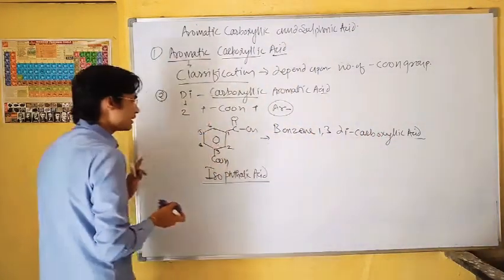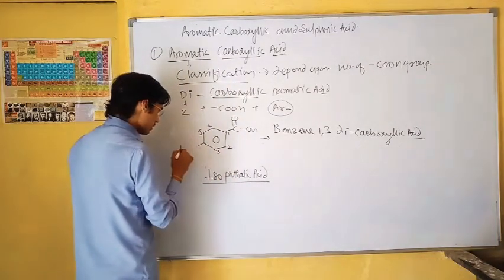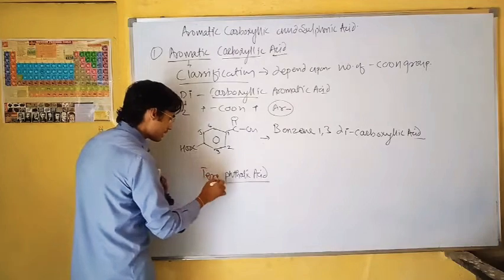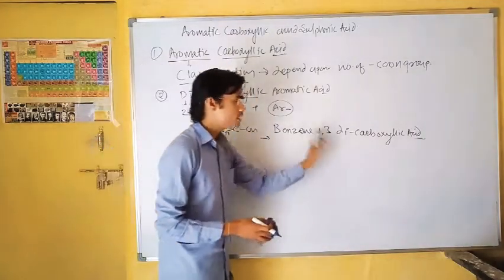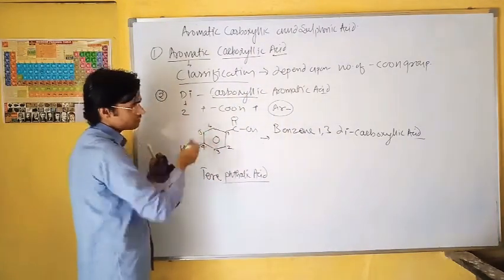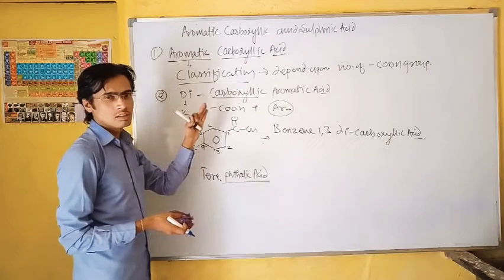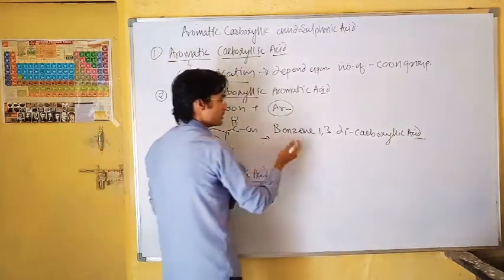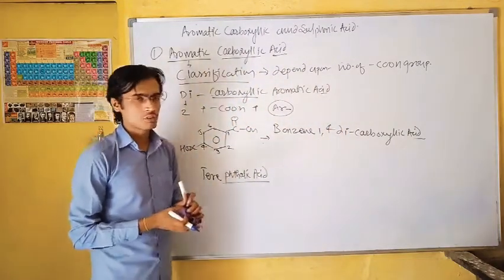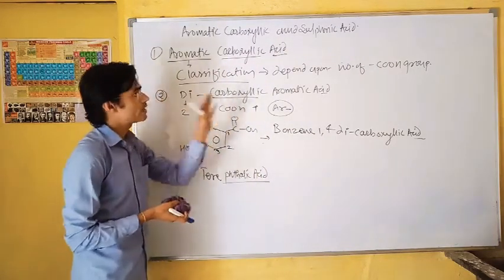If I introduce the -COOH from position 3 to position 4, the name becomes terephthalic acid. If I number from either side due to symmetry, positions 1 and 4 are equivalent. So benzene associated with -COOH at positions 1 and 4 gives the IUPAC name benzene-1,4-dicarboxylic acid. These are the examples of di-carboxylic aromatic acids.